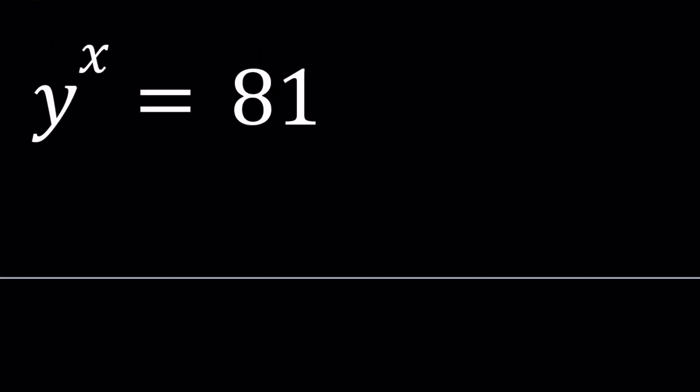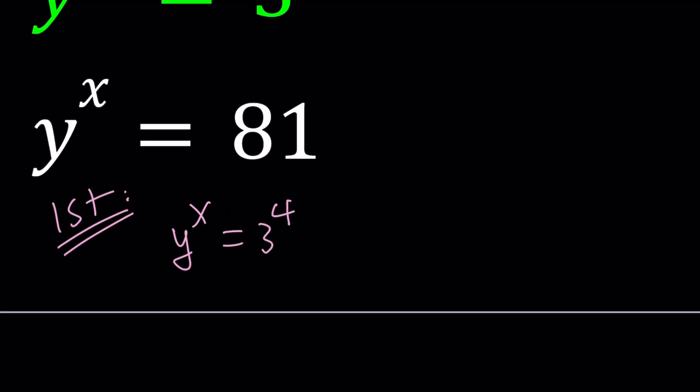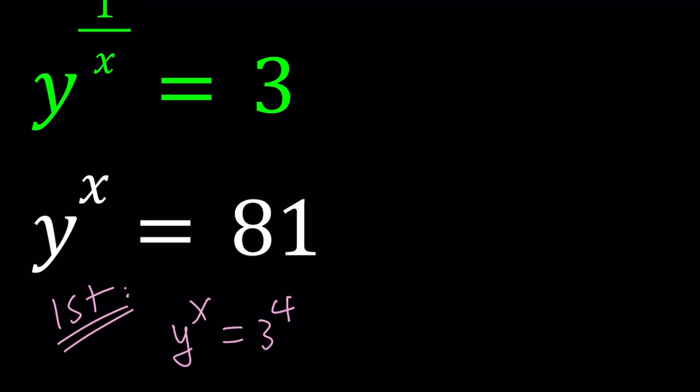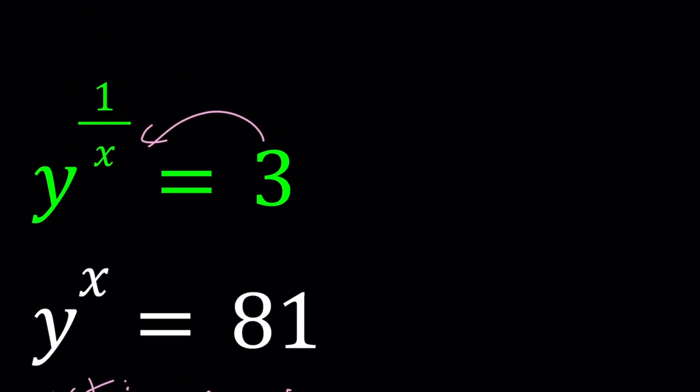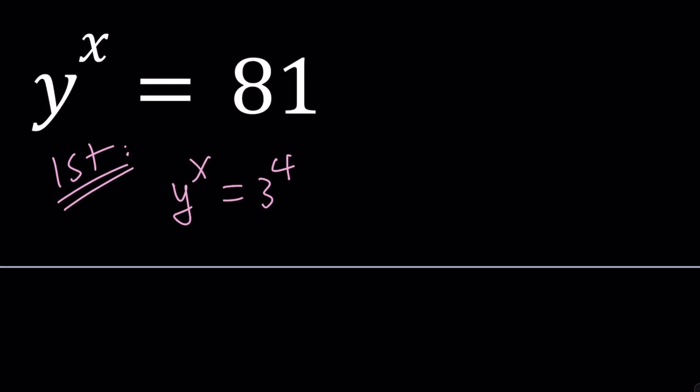First method. For my first method, I'm going to write 81 as 3 to the 4th power. And from the first equation, I know that 3 is equal to y to the power 1 over x, so I'm going to replace 3 with y to the power 1 over x and then raise it to the 4th power.